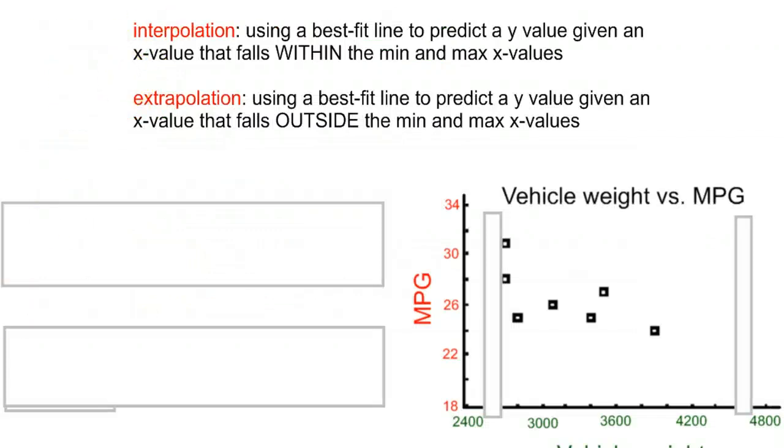Now we have two different types of guesses. One is called interpolation, and the other is called extrapolation. Interpolation, with 'in' at the beginning, is using the best fit line to predict the y value when the x value falls within the min and the max.